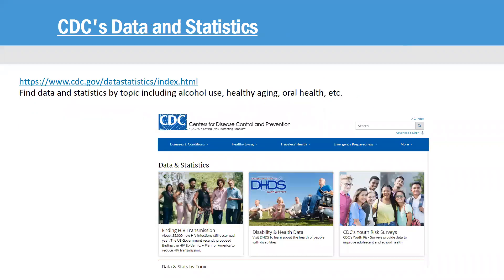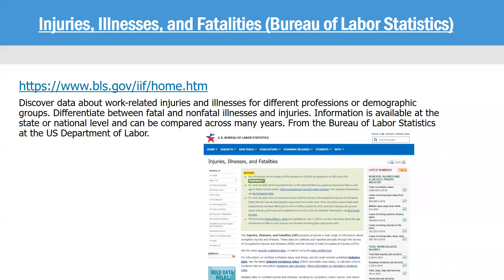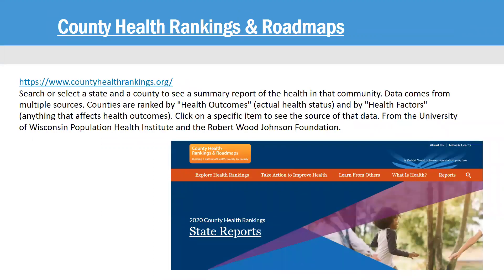CDC's data and statistics section has data and statistics organized by topic, including things like alcohol use, healthy aging, and oral health. If you're looking for statistics about work-related injuries or illnesses for different professions or demographic groups, you'll want to go to the Injuries, Illnesses, and Fatalities site maintained by the Bureau of Labor Statistics. County Health Rankings and Roadmaps are also great — you can search and select a state and county to see a summary report of the health in that community, and it draws data from multiple sources.